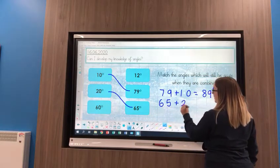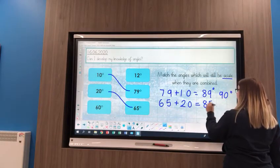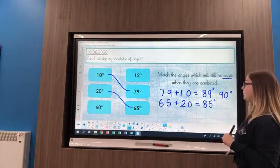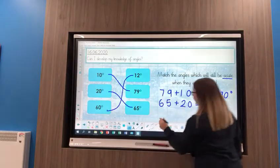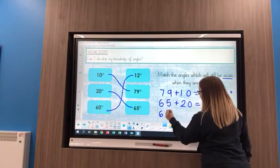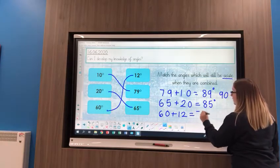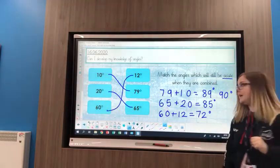65 and 20 equals 85 degrees, which again is less than 90, so still an acute. And then I've got 12 and 60 degrees left, so if I add those two together I get 72, which again is still an acute angle because it's less than 90.